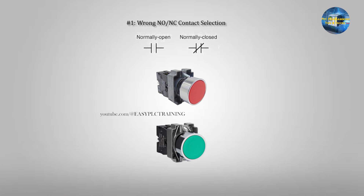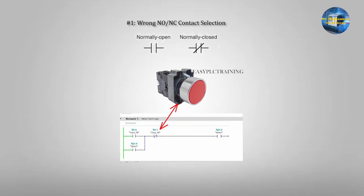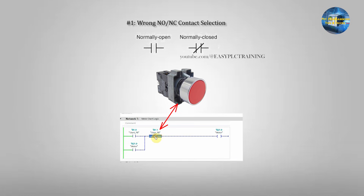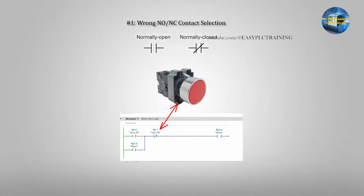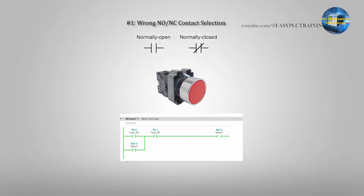Example 1: Wrong NO/NC contact selection. The first and most common mistake is using a normally open contact instead of normally closed, or vice versa. A stop button is wired NC but also used as an NC contact in the ladder logic. As a result, the motor never starts. Check the real input state, replace with the correct instruction — NO with NC or NC with NO — and retest the program.